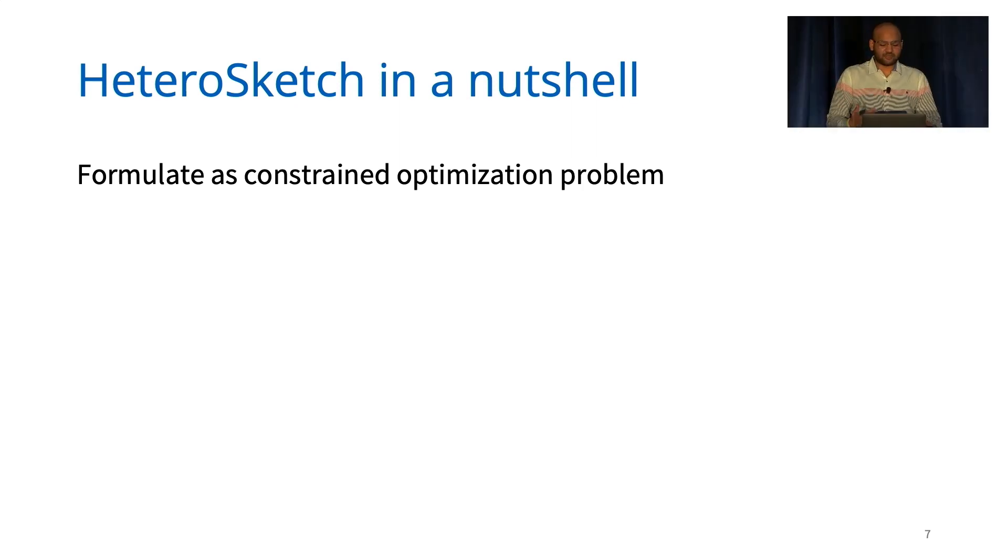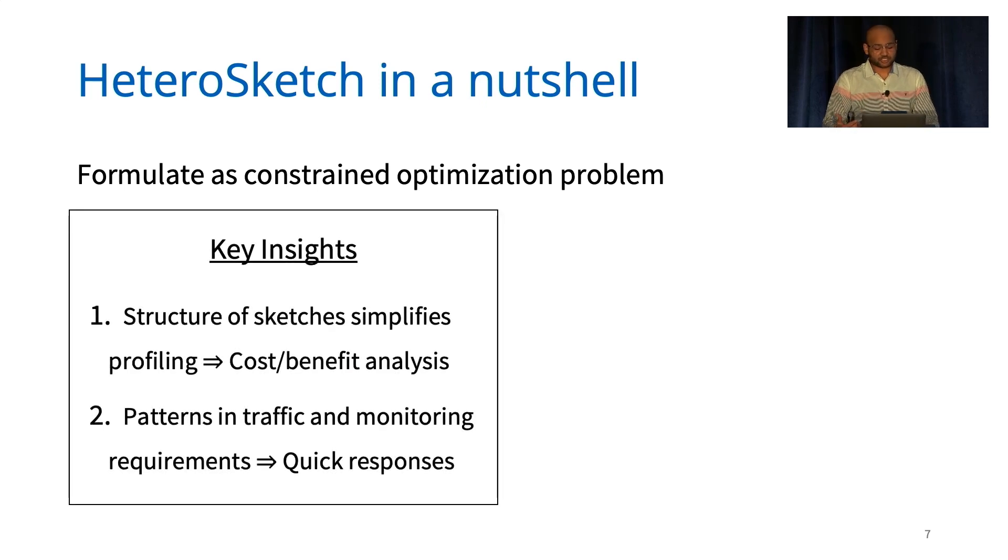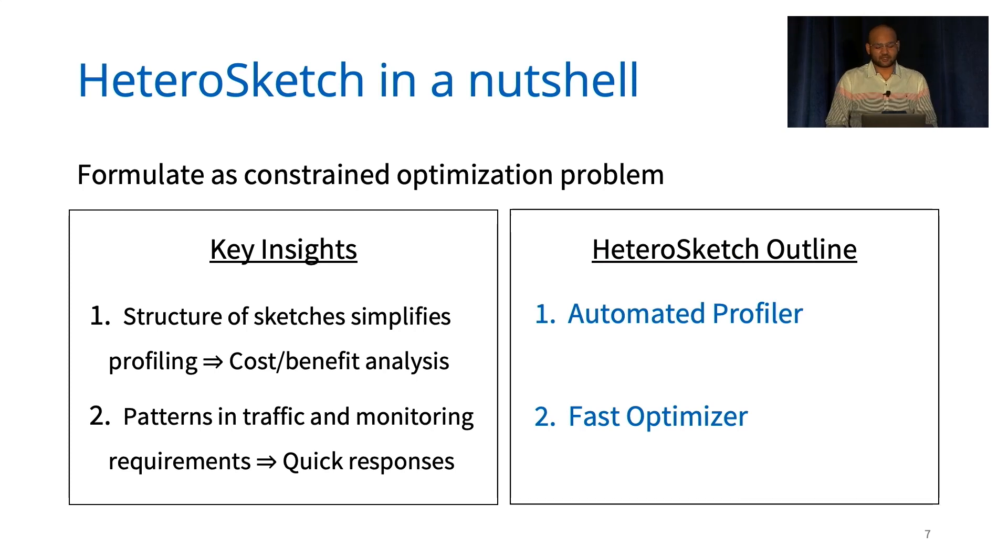So to do that, we approach this problem by formulating it as a constrained optimization problem. This approach is made possible by our two key insights. First, we find that the simple structure of sketches simplifies profiling their performance and resource trade-offs. Second, we find that we can leverage patterns in traffic as well as monitoring requirements to solve our optimization formulation quickly so that we can keep up with network dynamics. With these two insights, we build our system called HeteroSketch.